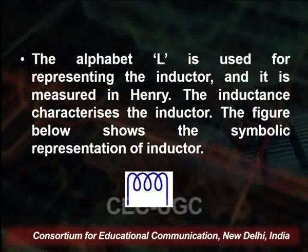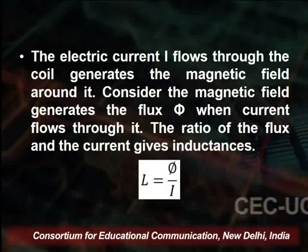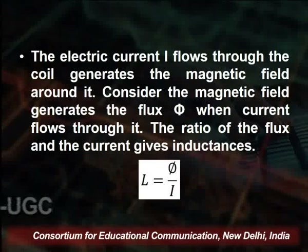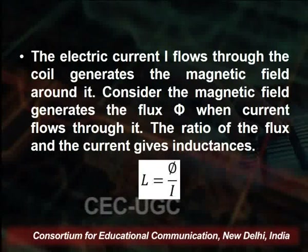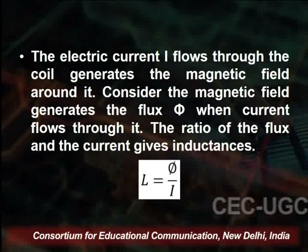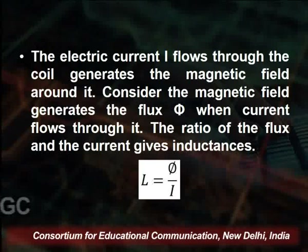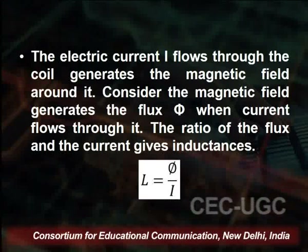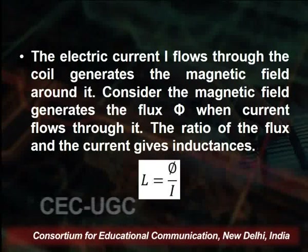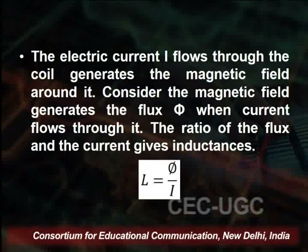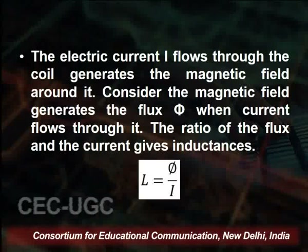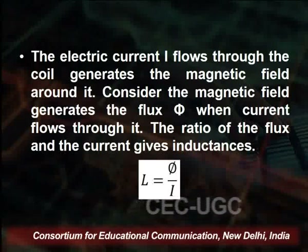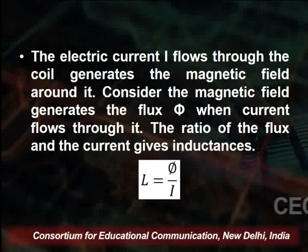In the figure we have an inductor that produces inductance. The electric current I flows through the coil and generates a magnetic field around it. When we apply electric current to a coil, the magnetic field is produced around it. Consider the magnetic field generated — the flux will be phi. When current flows through it, the ratio of the flux to the current gives the inductance: L is equal to phi divided by I.